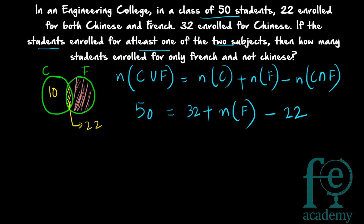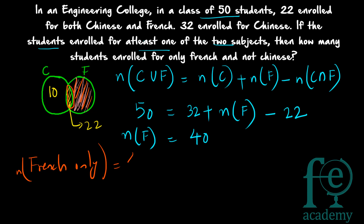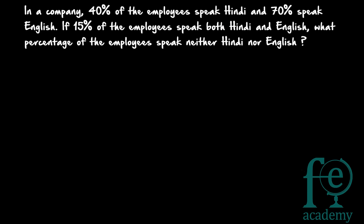So 40 students are studying French in total. But this includes the 22 in the overlap. To find students studying only French and not Chinese, we subtract: 40 − 22 = 18. So 18 students are enrolled for only French and not Chinese.